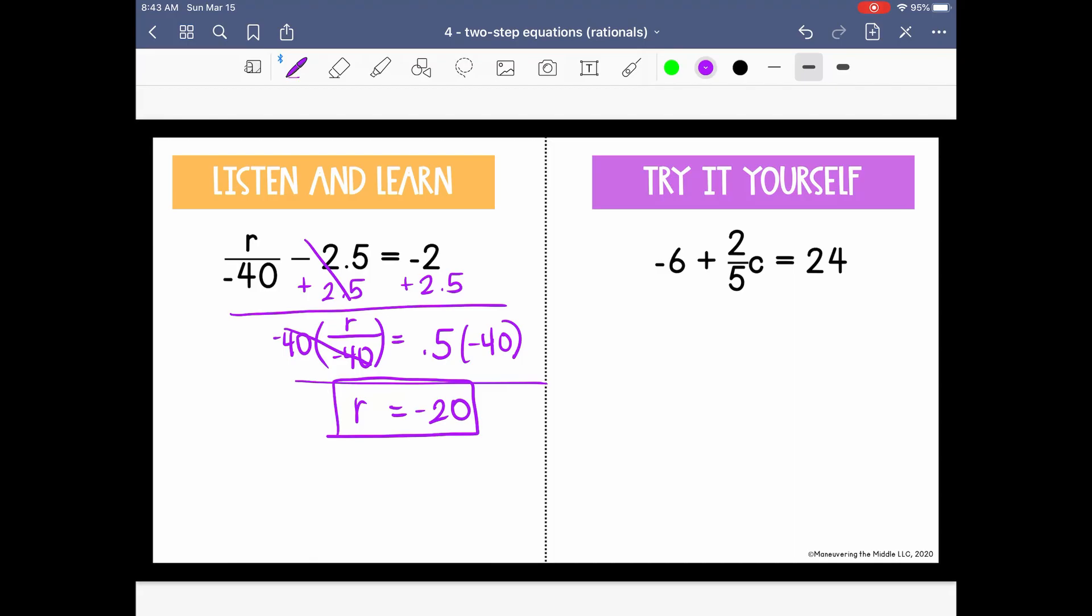Negative 6 plus 2 fifths c equals 24. The constant is negative 6. Let's remove it from the left by doing the inverse of adding 6. Here it cancels, and we have 2 fifths c is equal to 30. 2 fifths is being multiplied by c, so we need to divide both sides by 2 fifths.